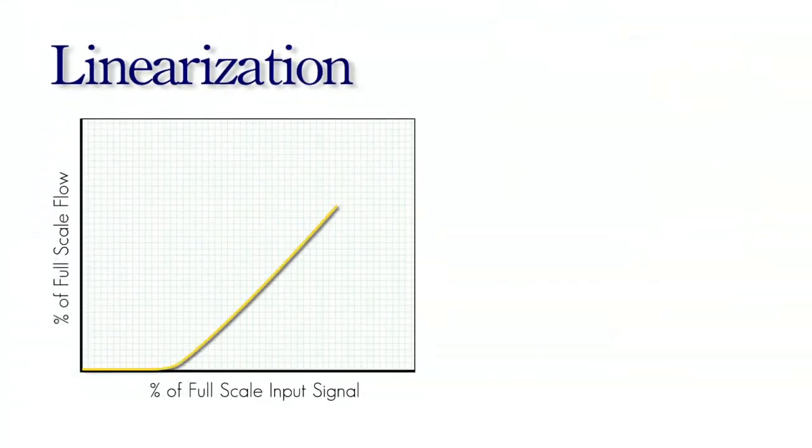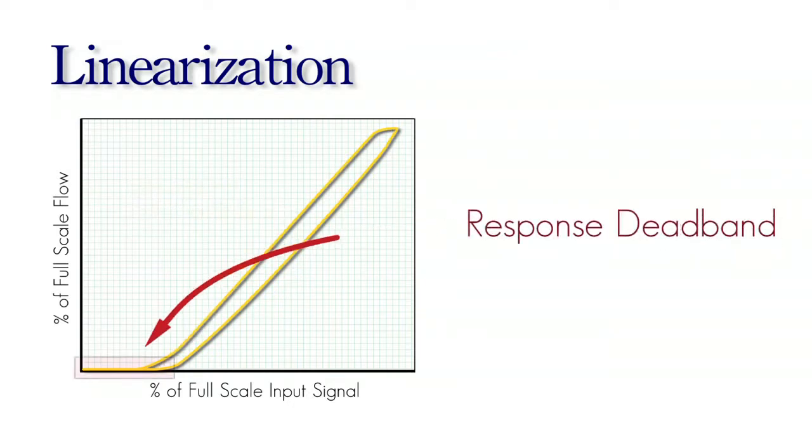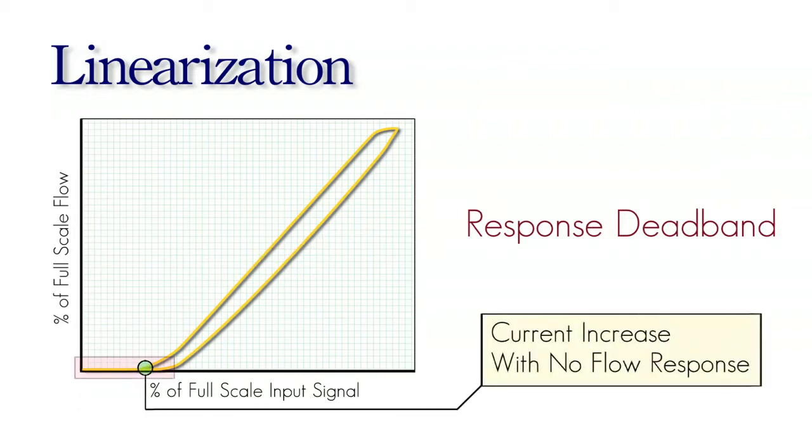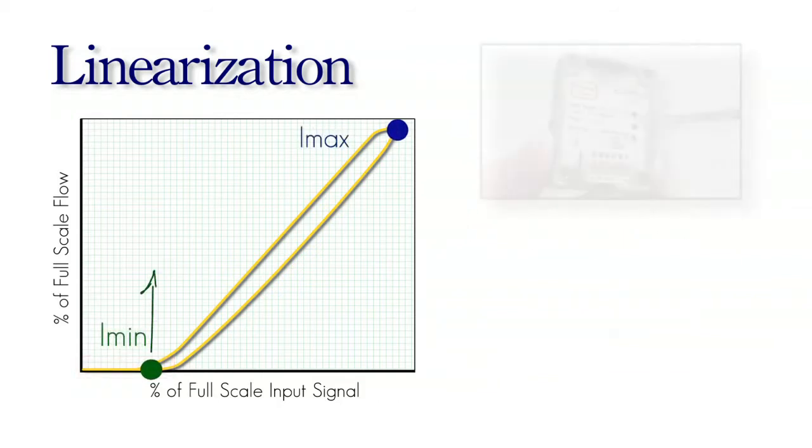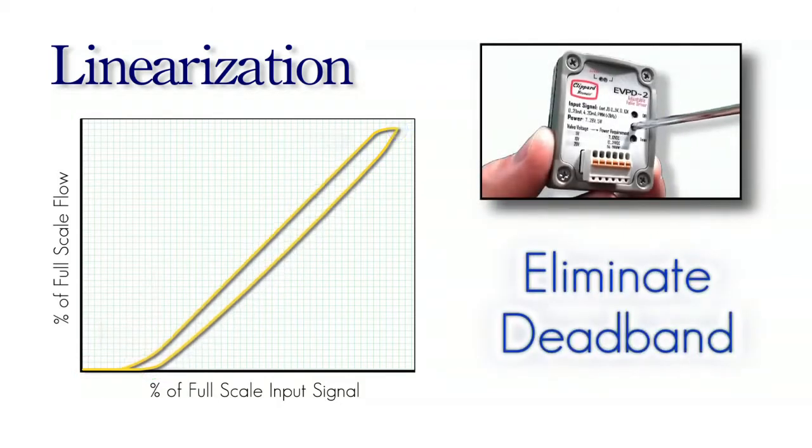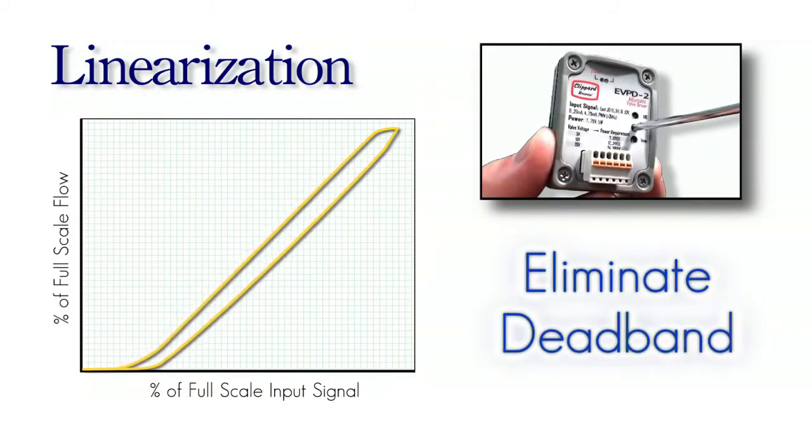Linearization is the other main function of the Clipper EVPD. Proportional pop-up valves have by nature a response deadband, where changing the current does not affect the flow. This is an inconvenient non-linearity that requires more sophisticated control schemes than many people would like for quick prototyping efforts. The user-adjustable minimum and maximum output current settings of Clipper's EVPD eliminate this deadband in the valve's flow in response to the controller's command signal.